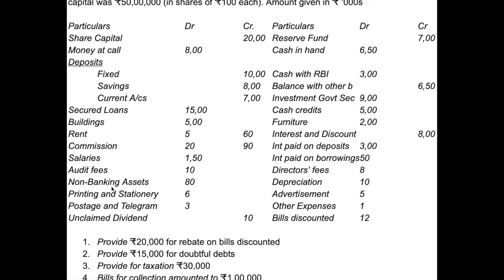Last schedule: these are non-banking assets, which are other assets. Fixed assets are Schedule 10. Unclaimed dividend — credit is liability, so other liabilities are paid. That is Schedule 5. Bills discounted is Schedule 9 — that is advances.